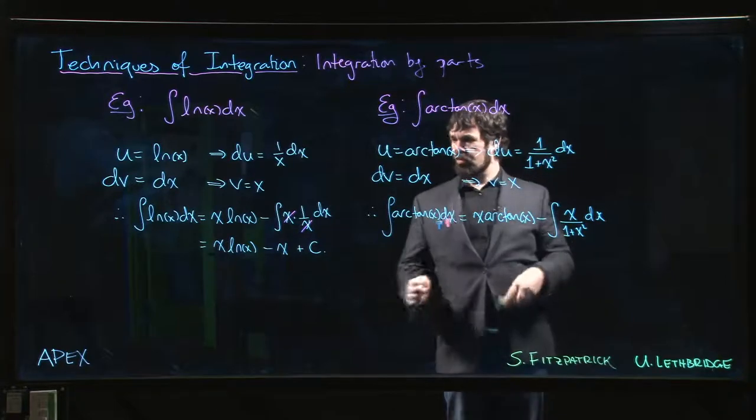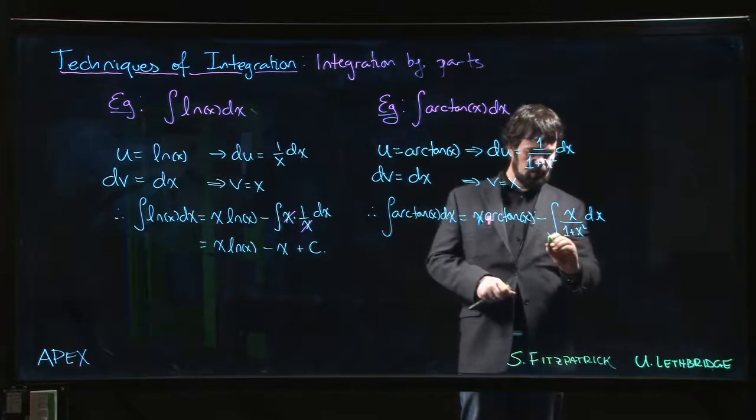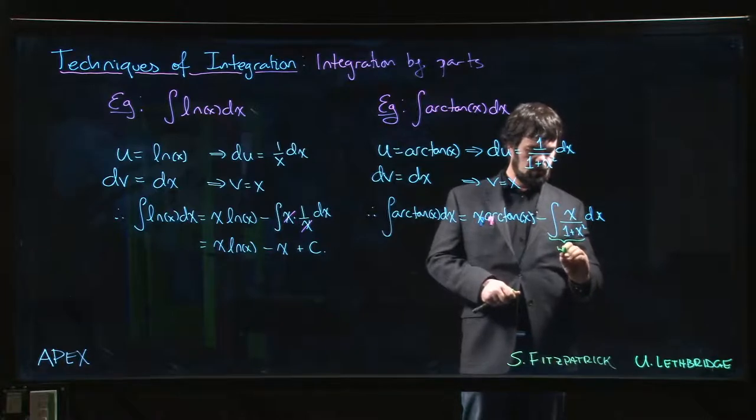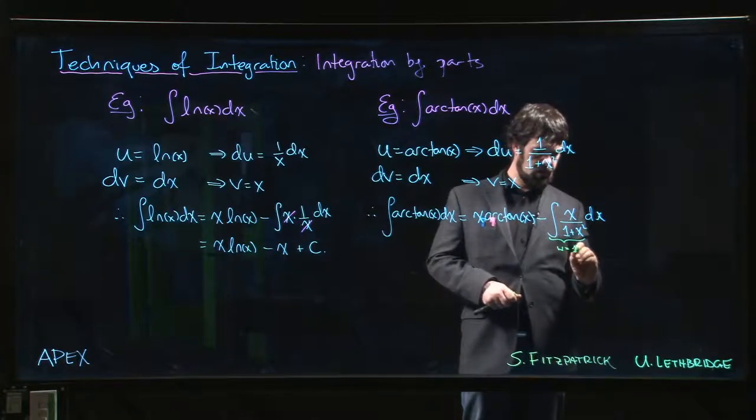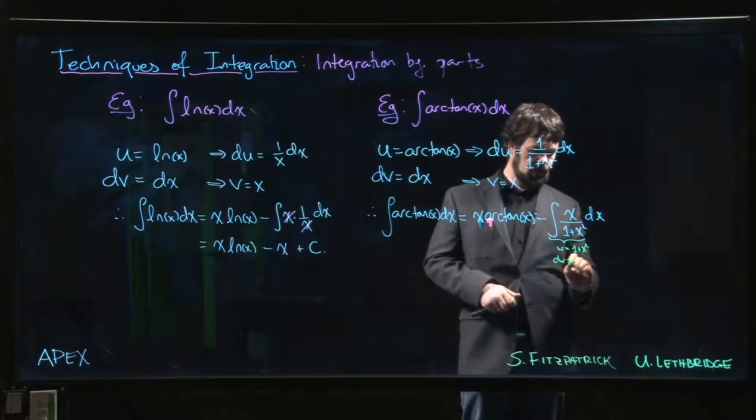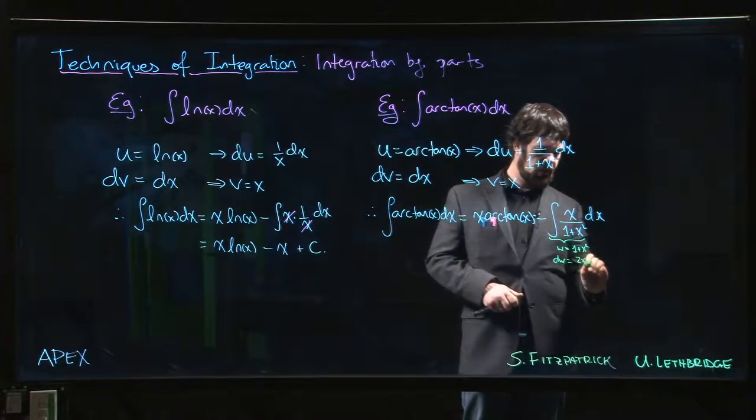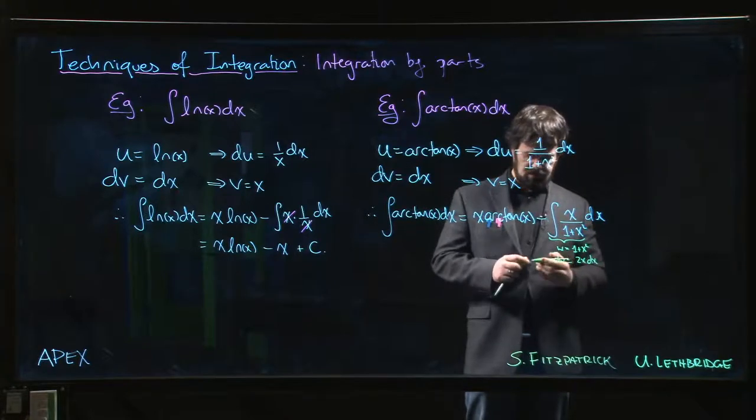Maybe we don't use u, we already used u. Let's call it maybe w. So how do we do that? So that would be 1 plus x squared, then dw would be 2x dx.